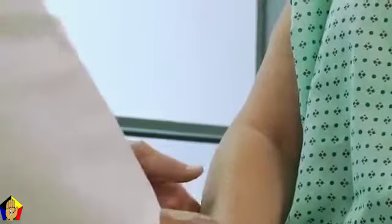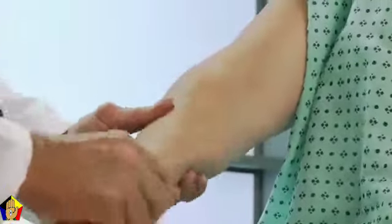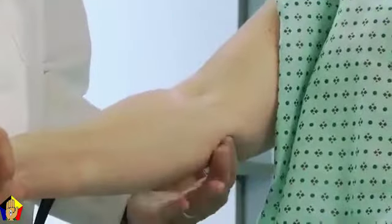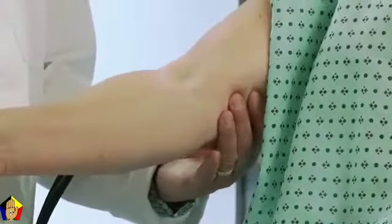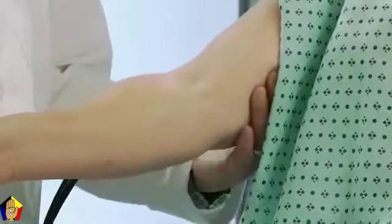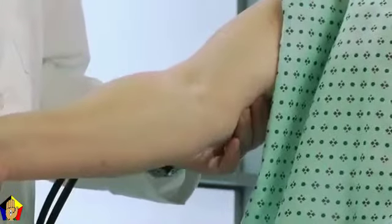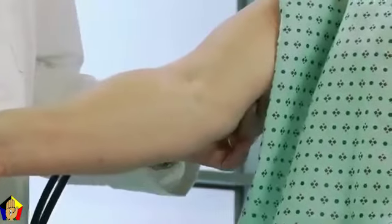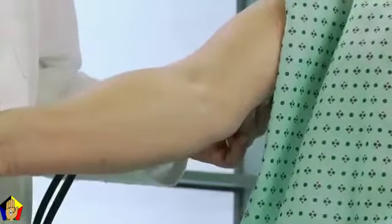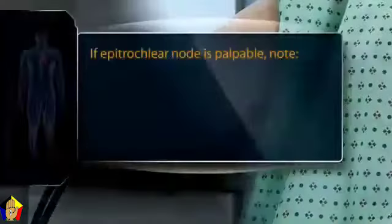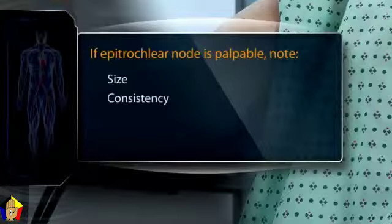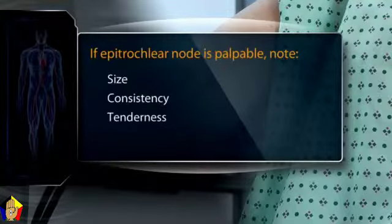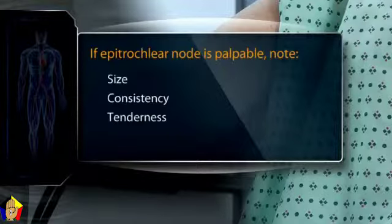Next, try to feel for one or more of the epitrochlear nodes. With the patient's elbow flexed at approximately 90 degrees and your hand supporting the forearm, feel in the groove between the biceps and triceps muscles about 3 centimeters above the medial epicondyle. If the epitrochlear node is palpable, note its size, consistency, and tenderness. These nodes are difficult or impossible to identify in most healthy people.